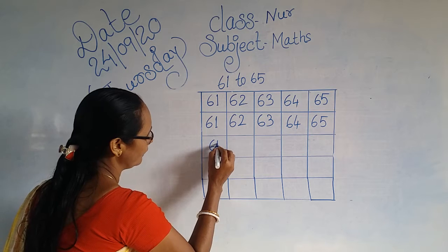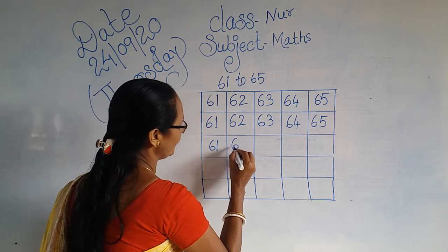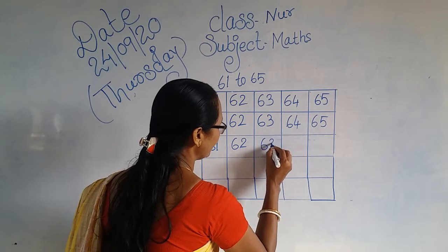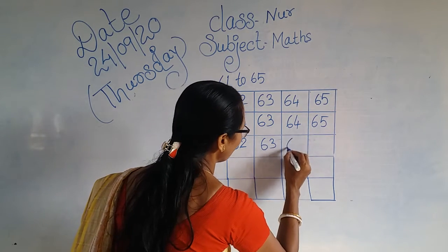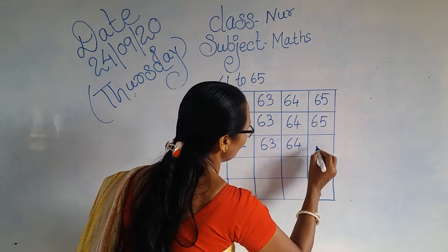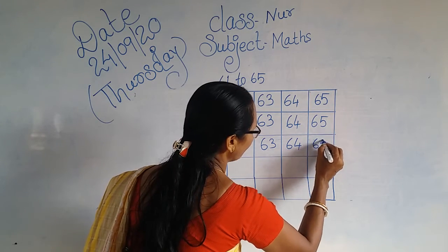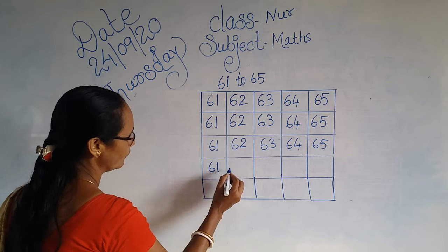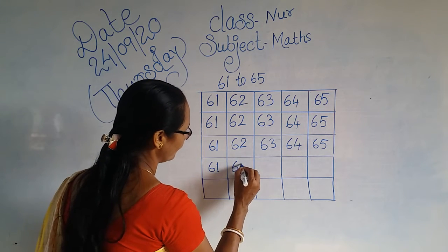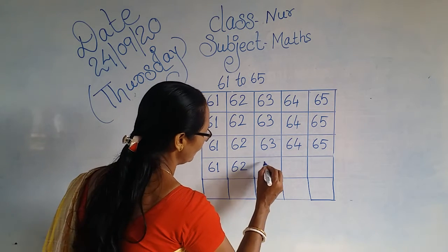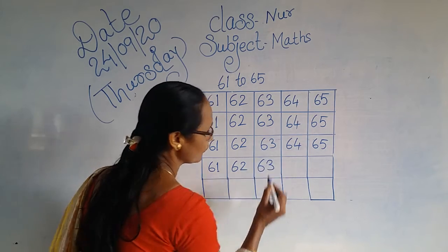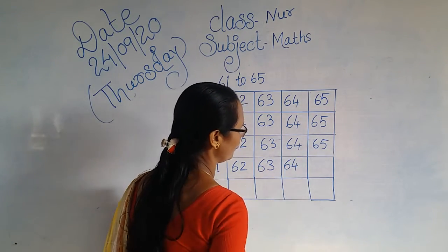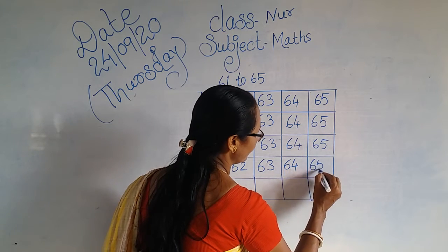6, 1 — 61. 6, 2 — 62. 6, 3 — 63. 6, 4 — 64. 6, 5 — 65. Again: 6, 1 — 61. 6, 2 — 62. 6, 3 — 63. 6, 4 — 64. 6, 5 — 65.